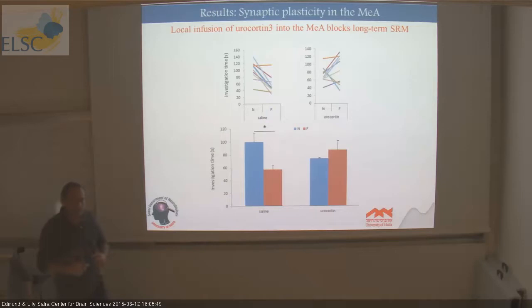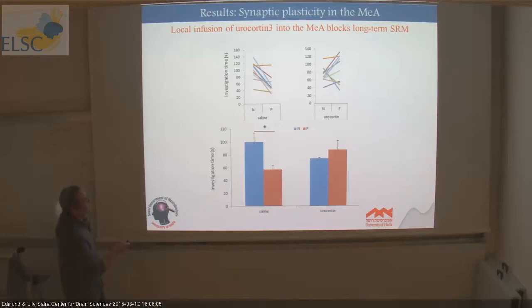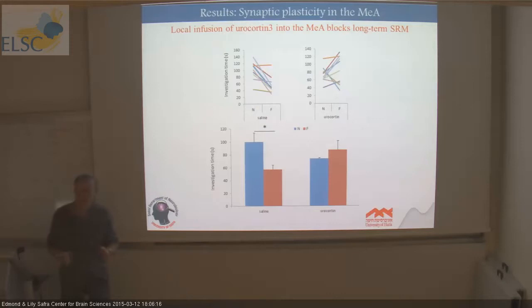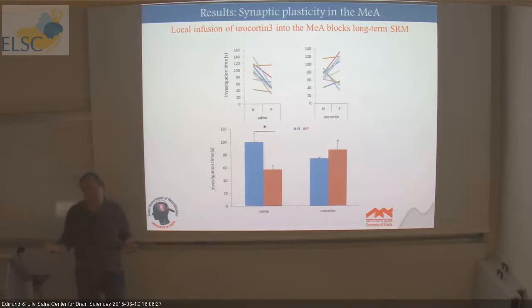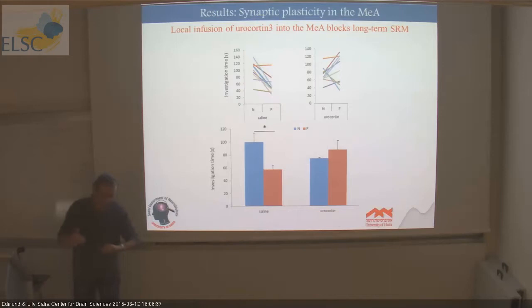So urocortin 3 in the medial amygdala just before training with a novel social stimulus prevents memory formation — the animal will not show reduction in investigation time the next time it meets the same stimulus. These are preliminary results, and there may be individual differences in response. We may need to personalize these responses. This ends the first section of the lecture.